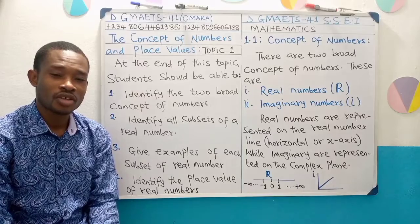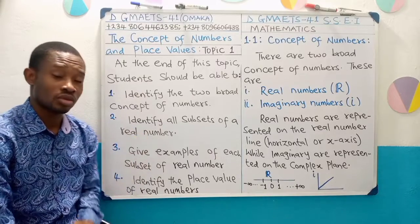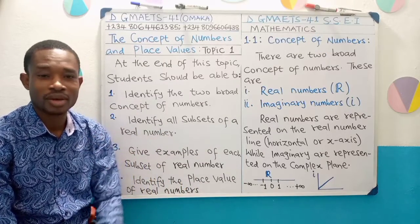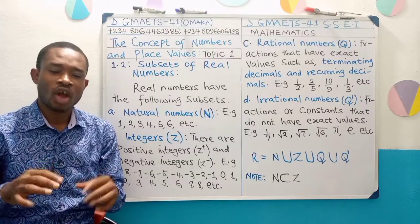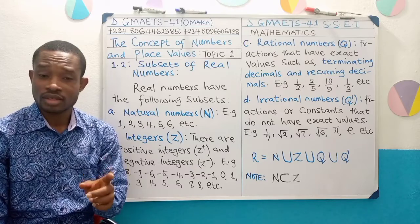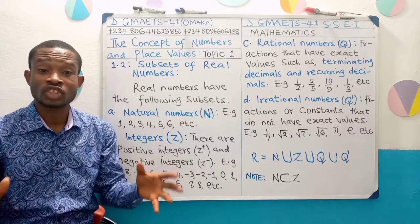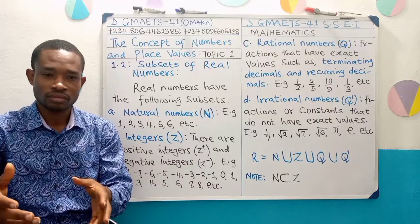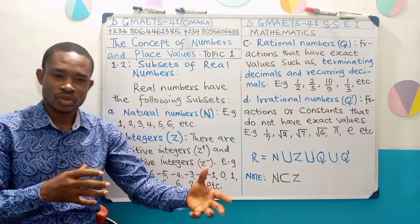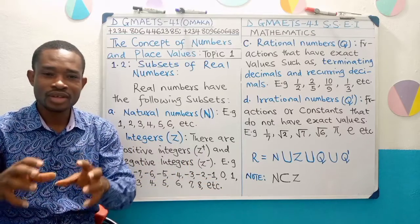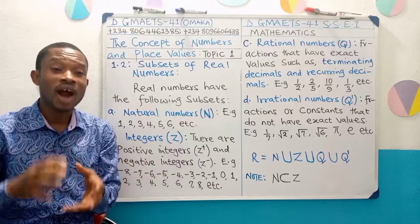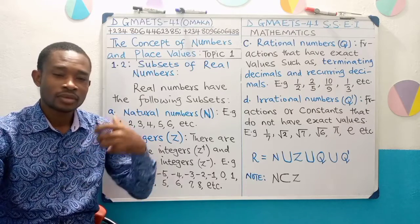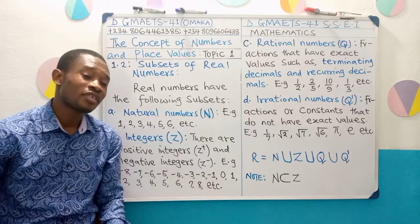We are coming to identify all the subsets of a real number — objective number two. Real numbers have different subsets under them, and that's what we are going to talk about now. What are the subsets of real numbers? First, it's important to know the meaning of subset. When you hear subset, it simply means part of. We want to find out the numbers that make up real numbers — those numbers that form part of real numbers. Here on the board we have these subsets.